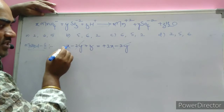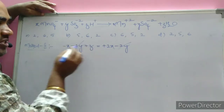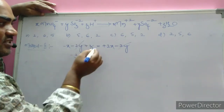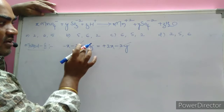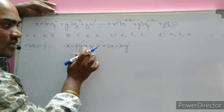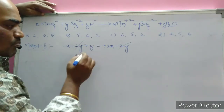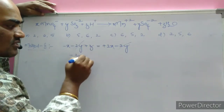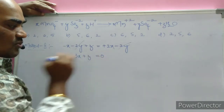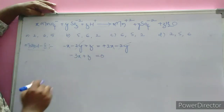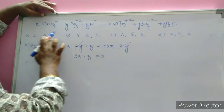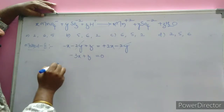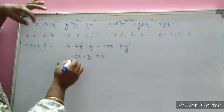Bringing plus 2x to the left-hand side gives minus 2x minus x equals minus 3x. Plus z remains, so the expression becomes: minus 3x plus z equals zero. We now use this equation to check which set of options (x, y, z) satisfies it.